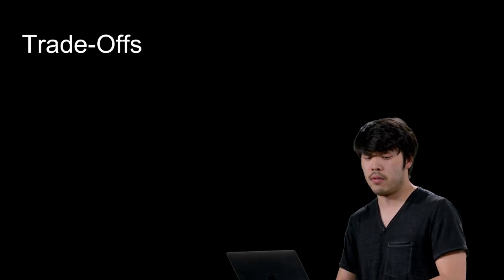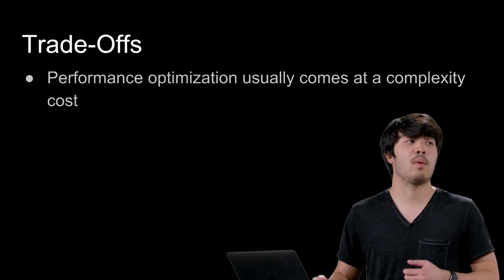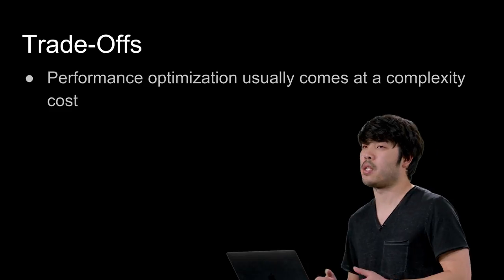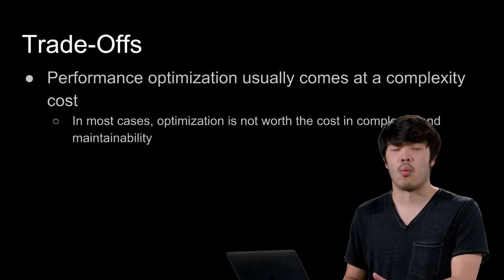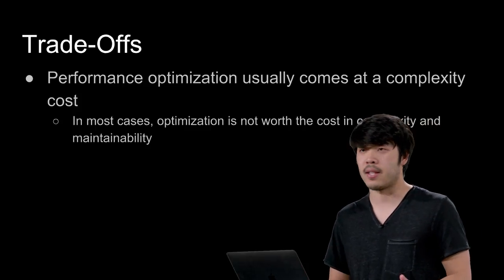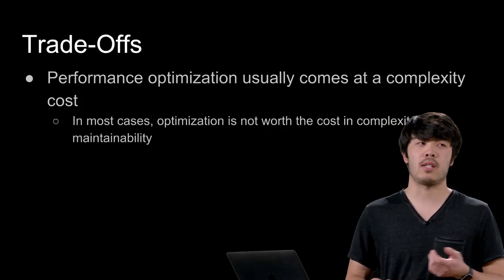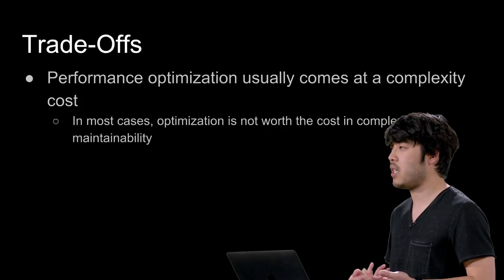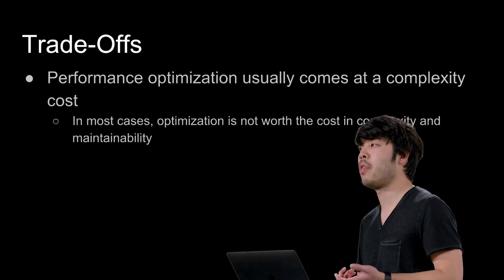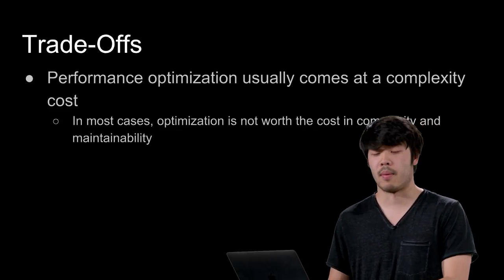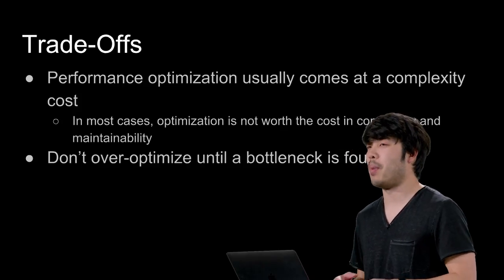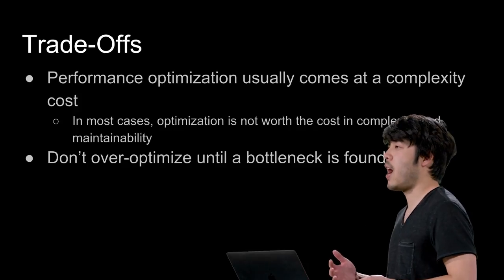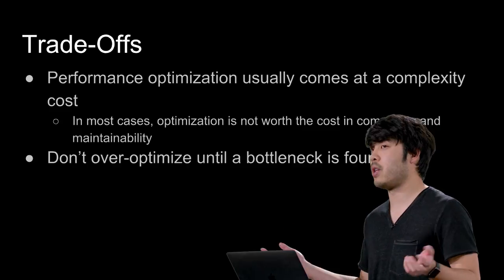One important thing about performance is knowing there are trade-offs involved. By optimizing performance, we usually pay some cost, and this cost is usually in your application's complexity. In most cases, it's actually not worth optimizing your code — JavaScript is now so fast that optimizing adds complexity, and that complexity and maintainability cost is not worth the little to no gains. In general, you don't want to over-optimize until you've found a bottleneck, meaning something slow enough that it slows down your entire app.